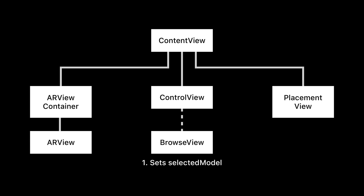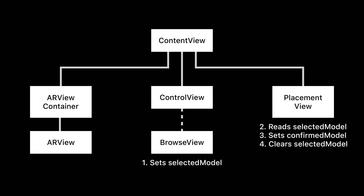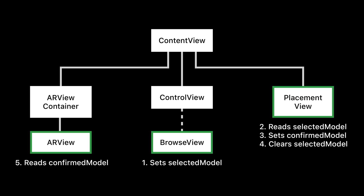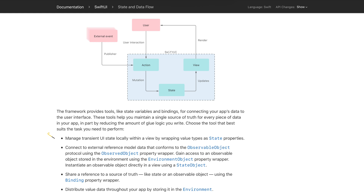At a minimum, we will need to manage two variables. The first variable will be selectedModel and will keep track of which model the user has selected from our browse view. The selectedModel variable then needs to be passed on to the placement view, which will read and clear the selected model. The second variable we have to create is confirmedModel. When the user confirms the selected model for placement in the scene, the selected model is assigned to confirmedModel. The confirmedModel variable needs to be passed on to the ARView, which will take care of placement in the scene. From this diagram, we can see that our data has to reach the bottom children nodes of our simplified view hierarchy. If we were to use state and binding variables, we would have to pass a binding through several layers of our view hierarchy — almost every view would need a binding to state properties in content view. In addition, state properties are intended to manage user interface state, not necessarily to pass around model data.